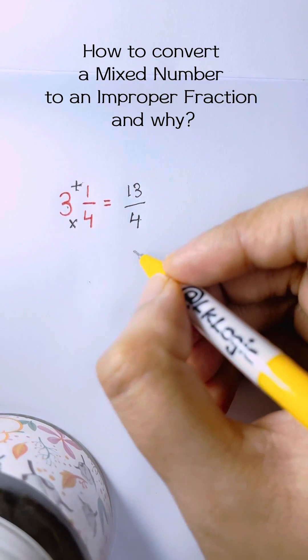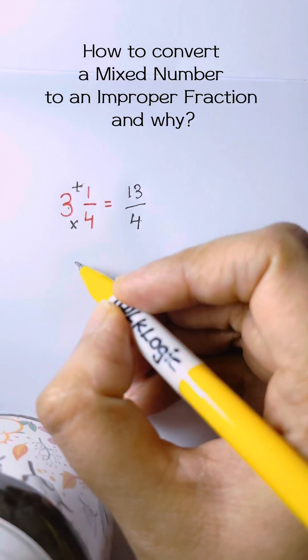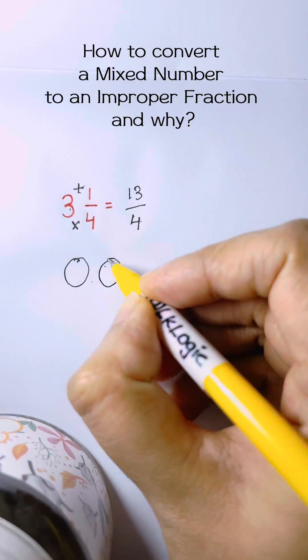But why does this process work? Well, let's find out and try it. You have 3 wholes and 1 fourth.